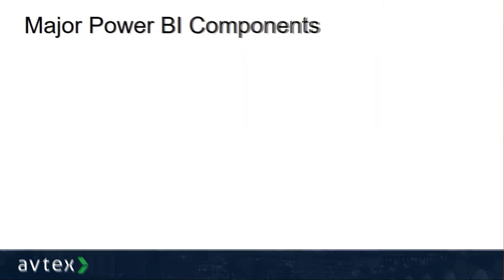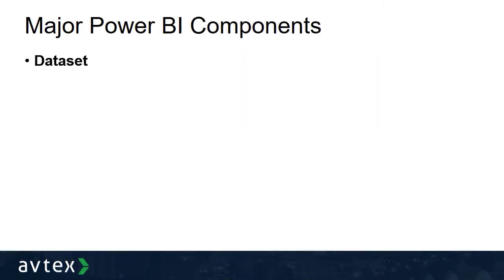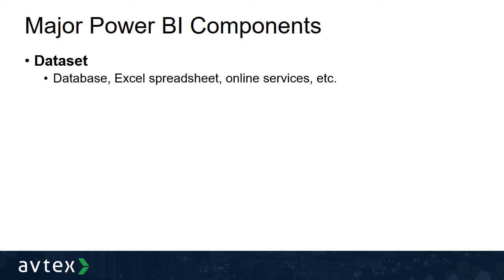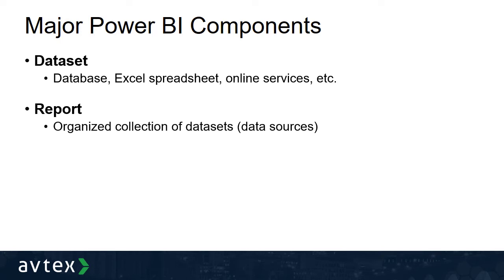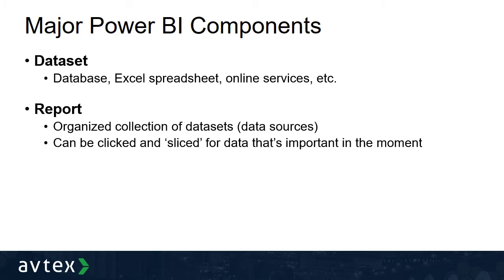The first component is the dataset. A dataset can be anything from a database to an Excel spreadsheet or an online service that allows you to connect to a data source. Once you have datasets configured, you can use that data to build the second component, the report. A Power BI report is an organized collection of data from the different data sources you've configured that can be clicked into and sliced in ways that are important to you in a given moment.